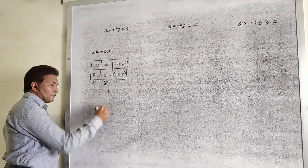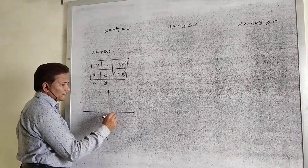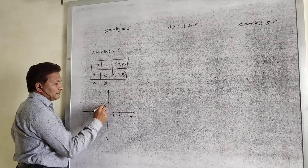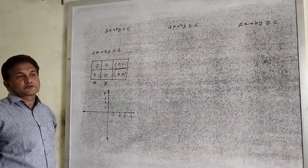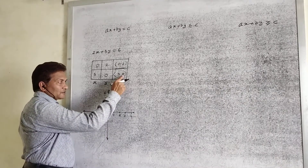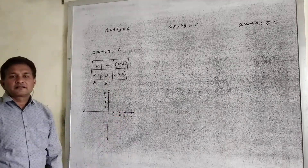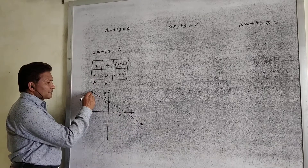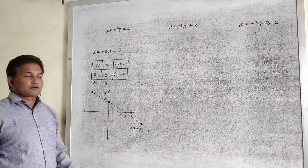We represent the given line on the graph, plotting 1, 2, 3, 4 on the x-axis and 1, 2, 3, 4 on the y-axis. The line passes through these two points. The first point (0, 2) — since x equals 0, it is on the y-axis. The second point (3, 0) — since y equals 0, it is on the x-axis. Draw the line passing through these two points. This is the line 2x plus 3y equal to 6, and this is the graphical representation of the linear equation.